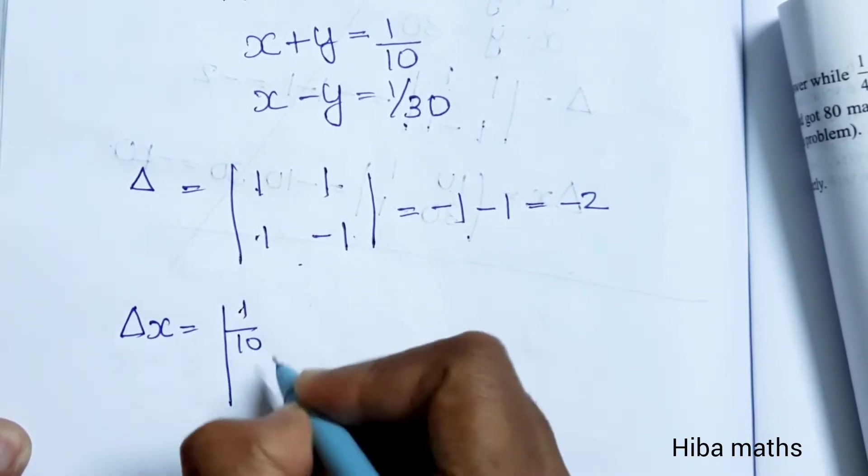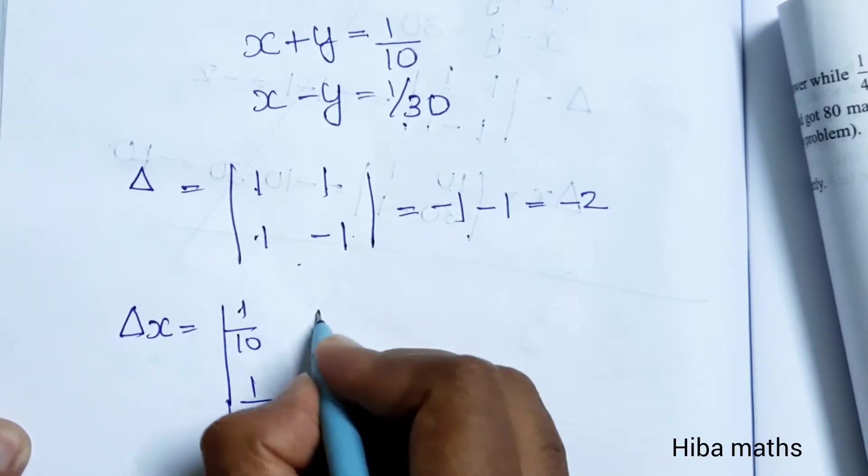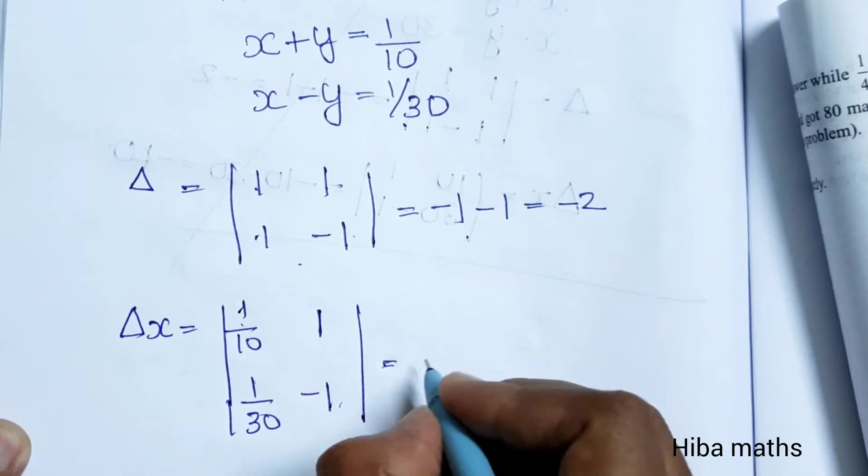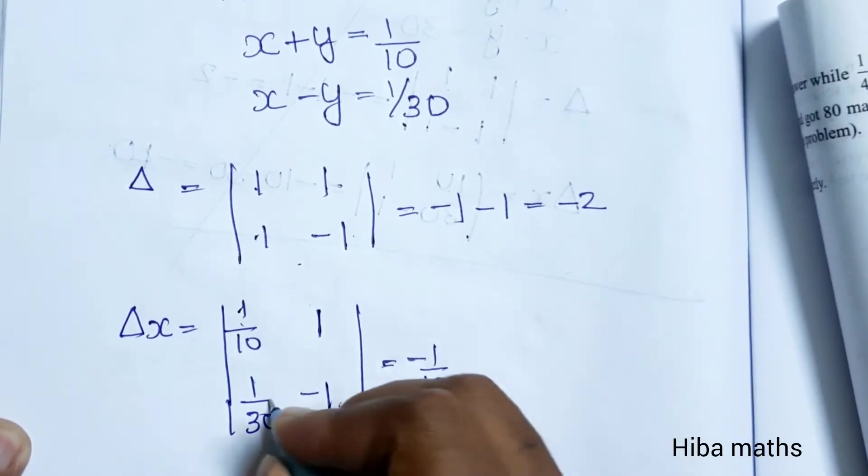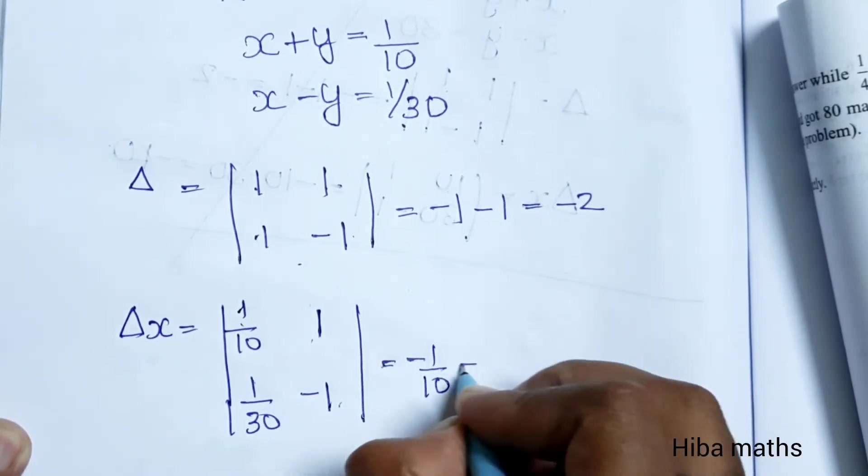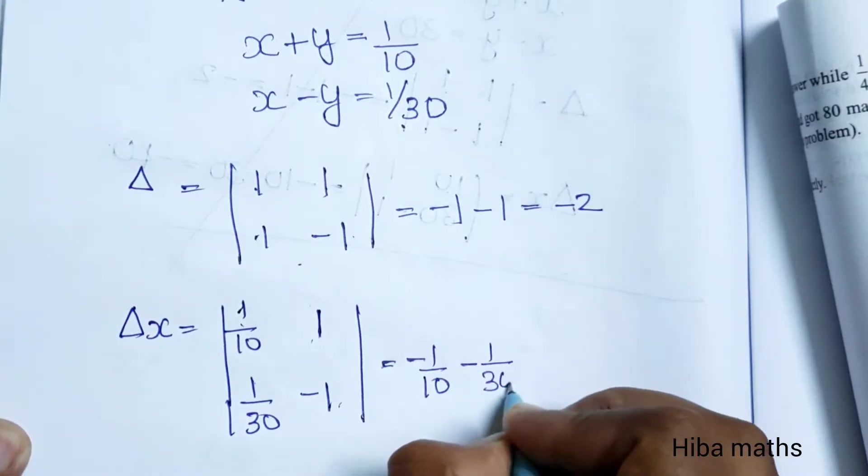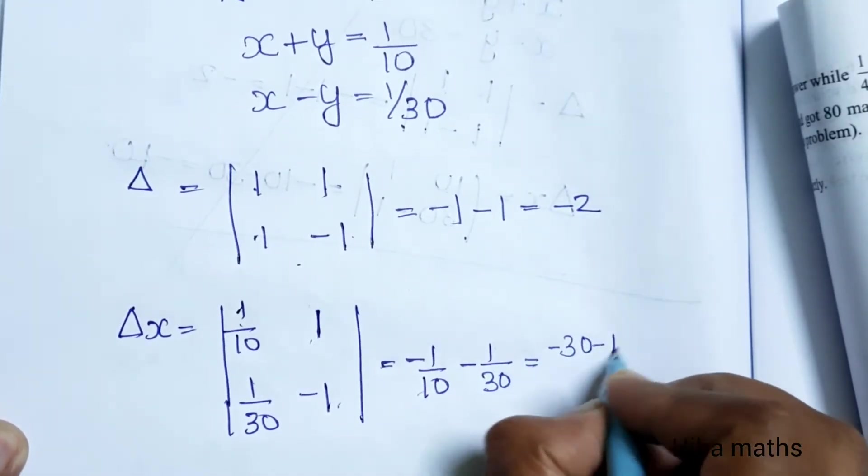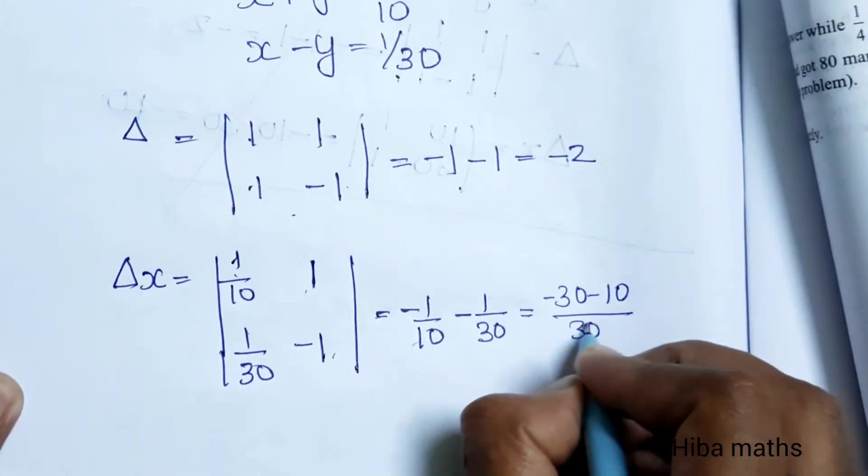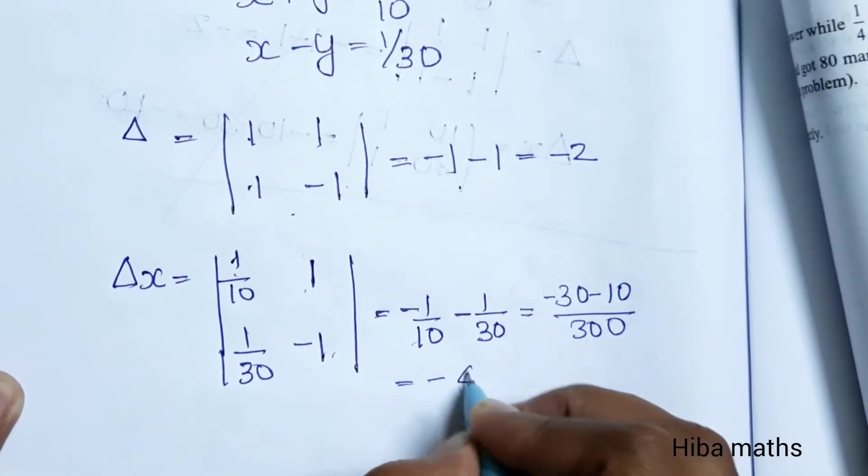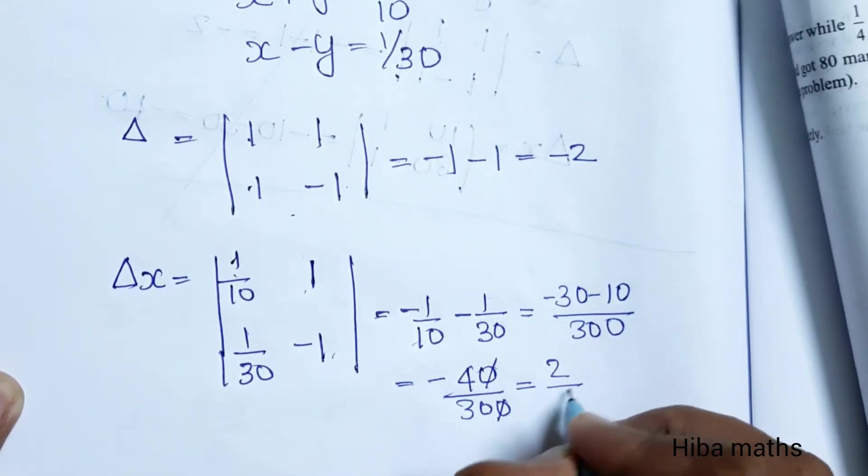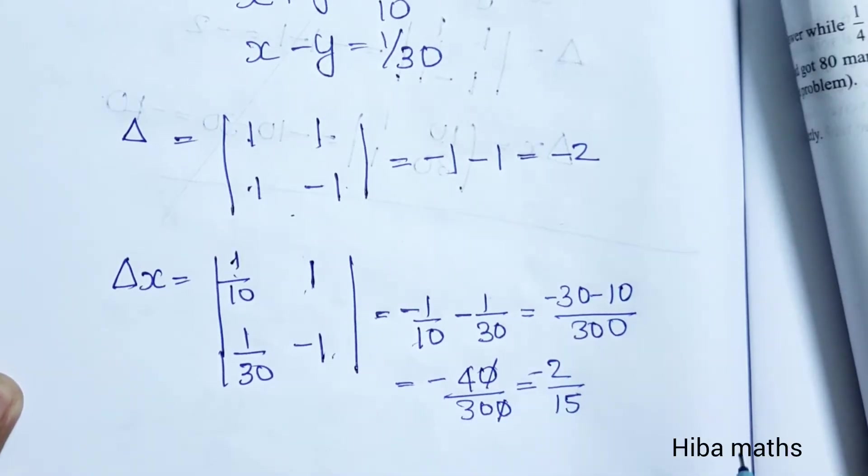Delta x: In the first column, 1/10, 1/30. Second column is 1, minus 1. This equals 1/10 times minus 1 minus 1/30 times 1, which equals minus 1/10 minus 1/30. Cross multiplying: minus 30 minus 10 divided by 300 equals minus 40 by 300, which simplifies to minus 2/15.